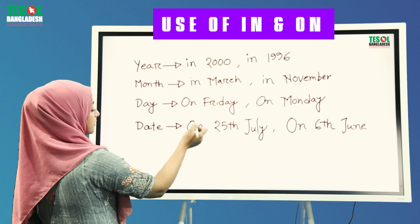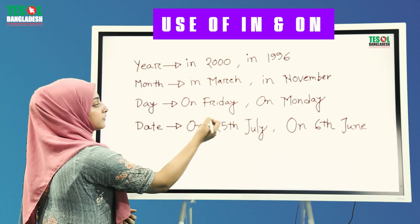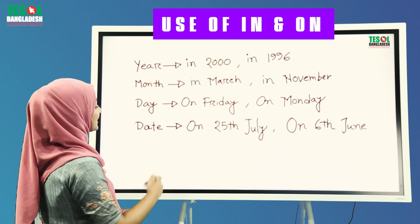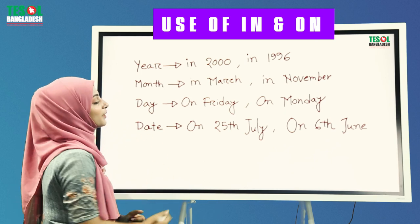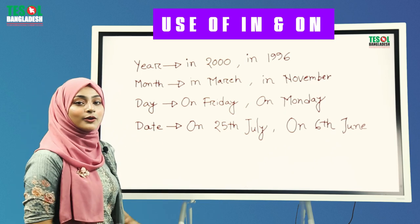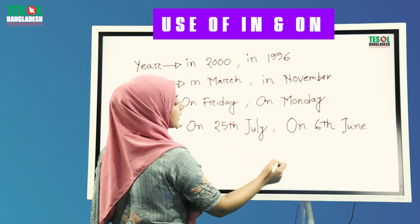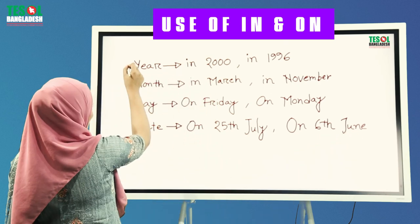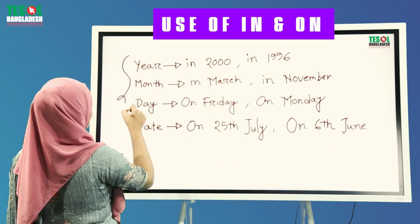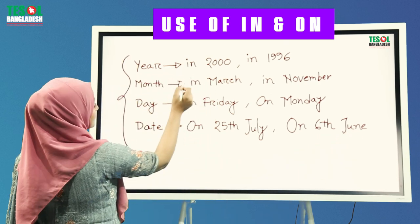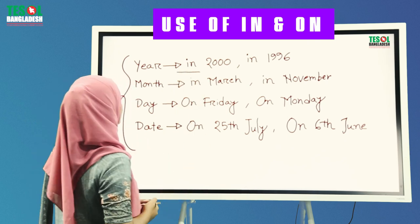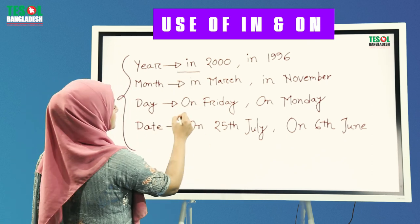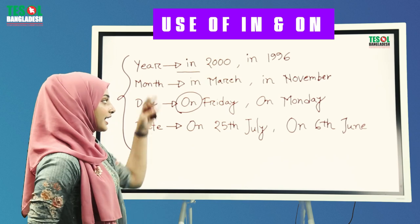Day-er khetre amra 'on' vayabhar kurubo. For days: on Friday, on Monday. Then for specific dates: on 25th July, on 6th June. So, bochor maasher khetre amra preposition 'in' ke vayabhar kurubo, ebong din tarikheer khetre amra preposition 'on' ke vayabhar kurubo.